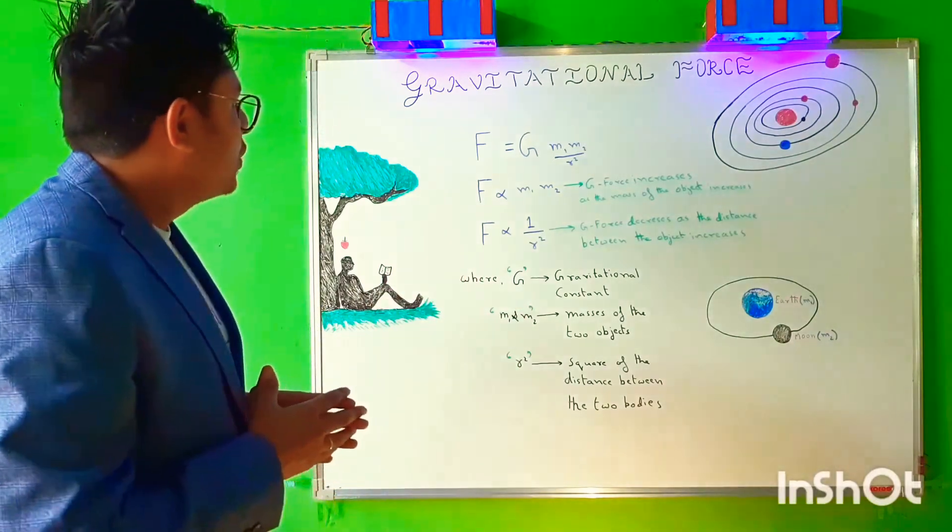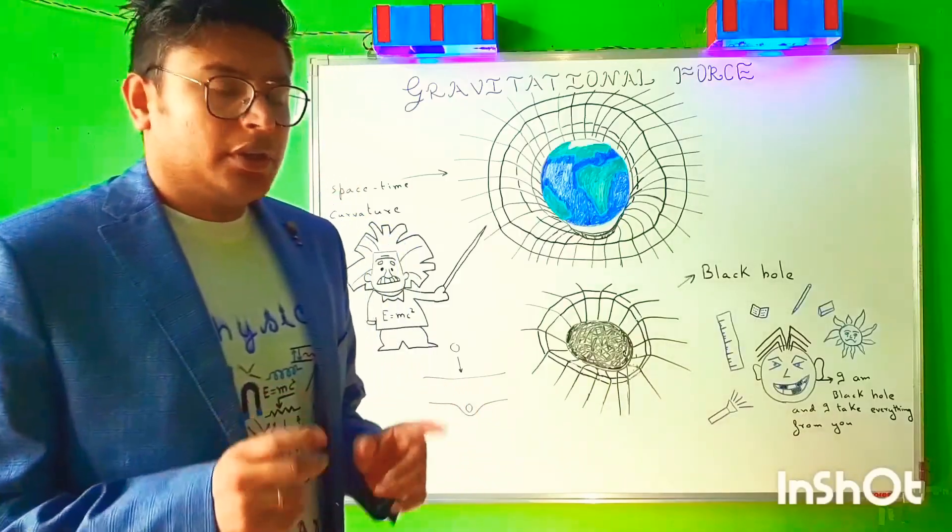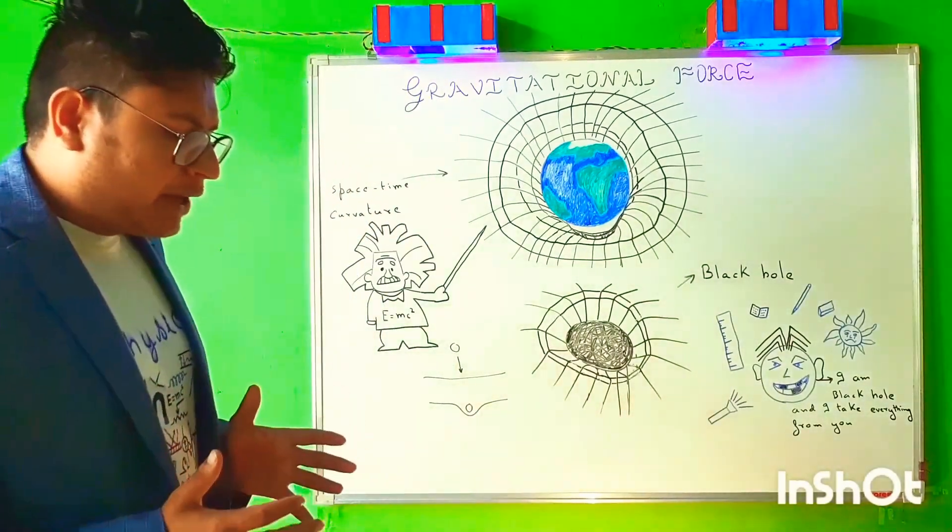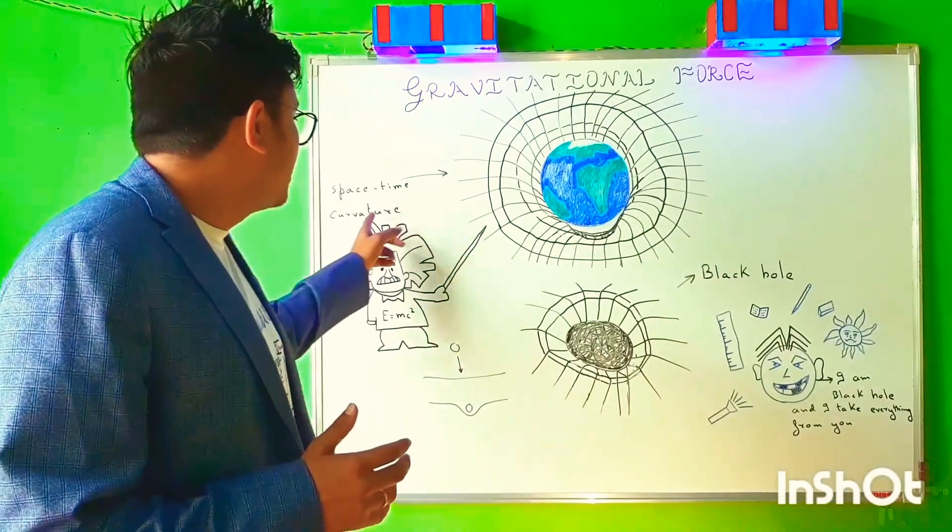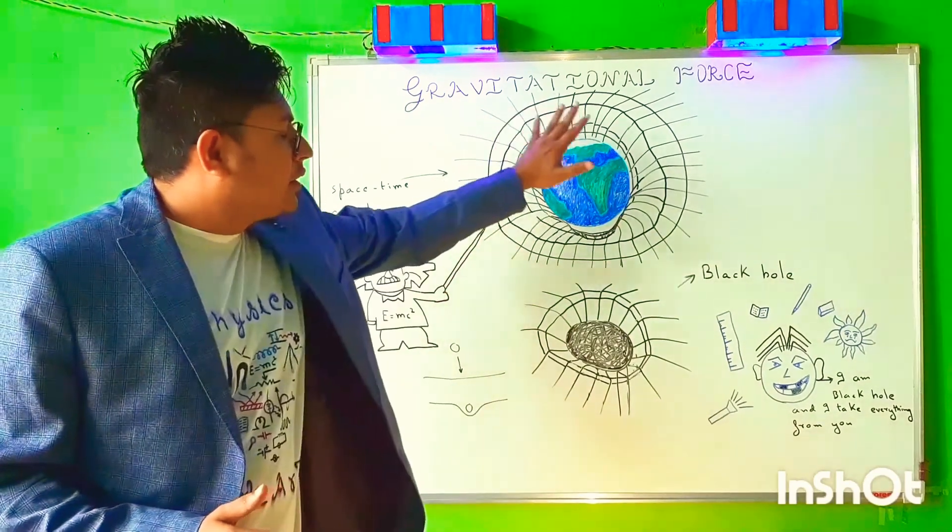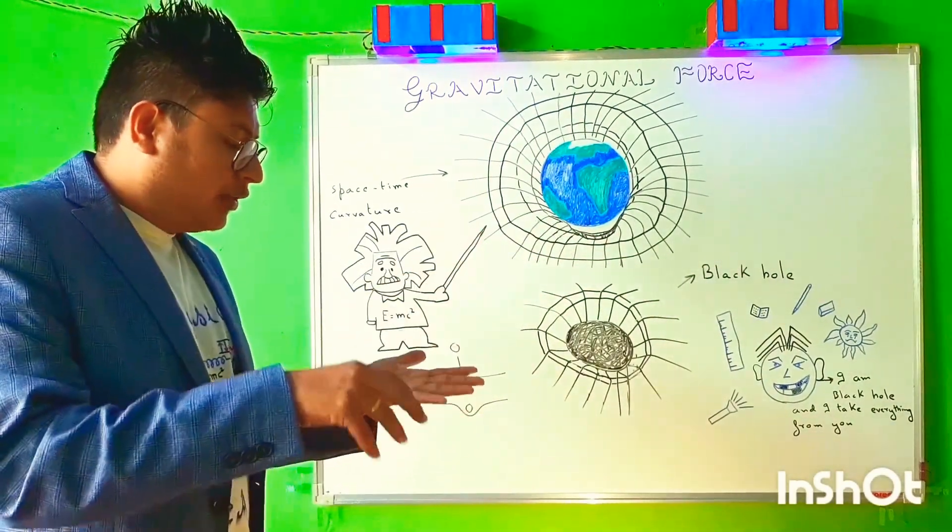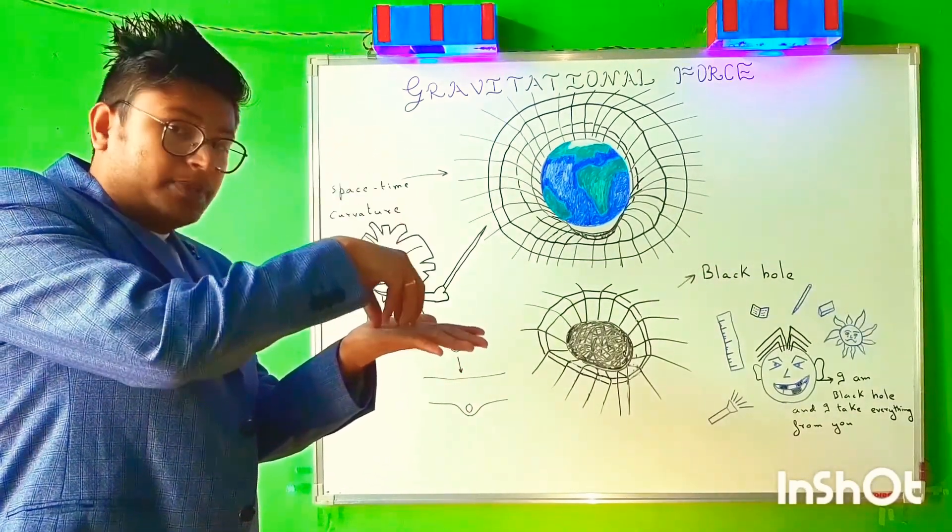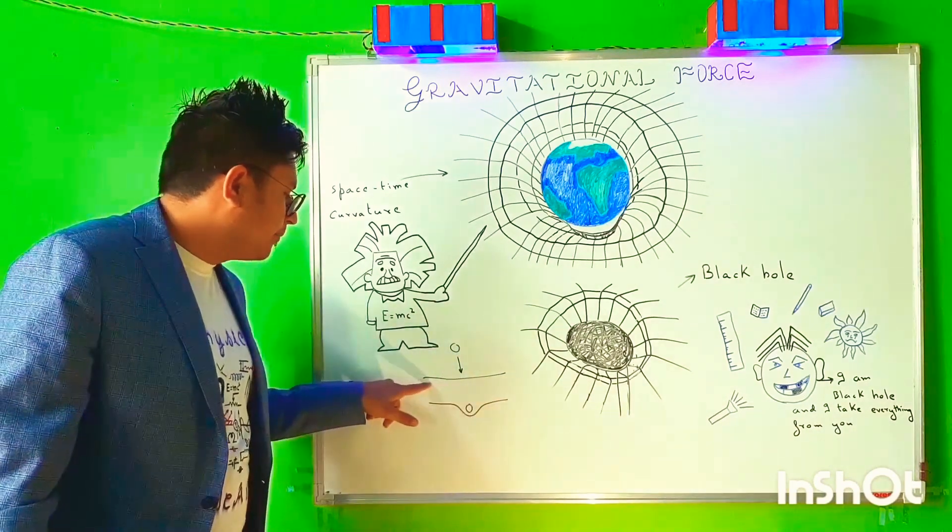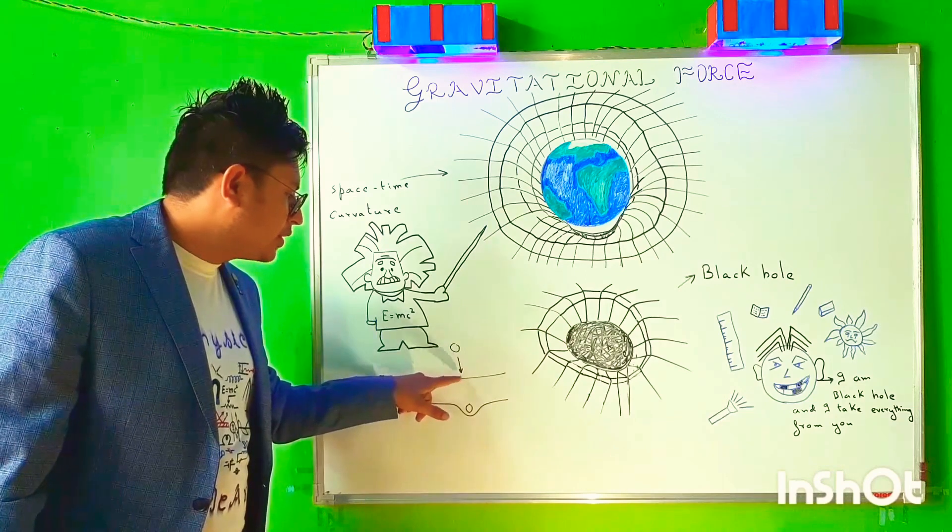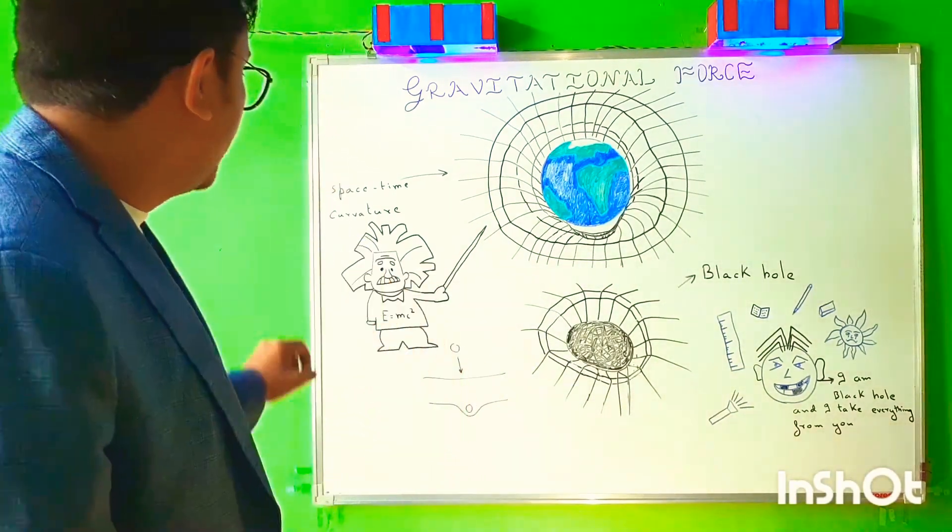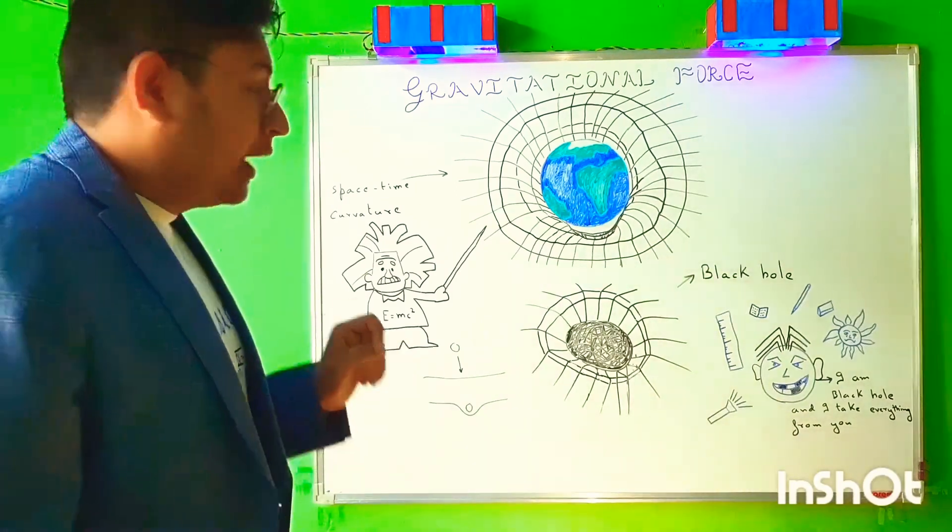So this was what Newton said regarding gravitation. Then in the early 20th century there happened to be a physicist whose name was Professor Albert Einstein, who described gravity not as a force but as a spacetime curvature. He said that there happens to be a fabric, a spacetime fabric, where you keep a massive object in it, and in that spacetime fabric there happens to be a dip like this. This is the spacetime curvature. This is how Einstein defined gravity.